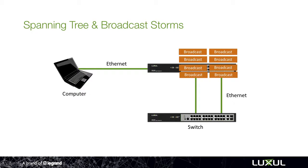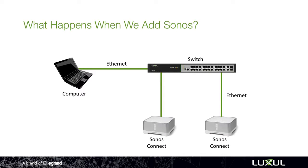What happens when we add Sonos into a system? Commonly in our industry we use Sonos as an example because of the way they work on a network. As with any device, we always want to plug it in via ethernet if possible, since ethernet is always a better connection than wireless. However, Sonos also has a wireless setup that is automatically running, called SonosNet, which means they create a wireless link between each one of their devices regardless of whether it is hooked up via ethernet. So now we've got two ethernet lines — one going to each Sonos Connect — and the wireless link in between them, which creates a loop in our network.